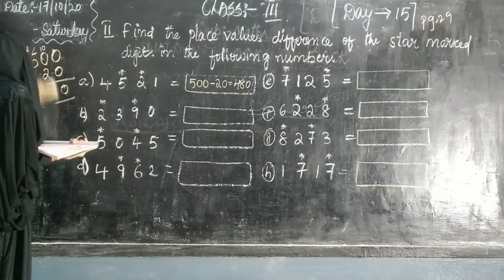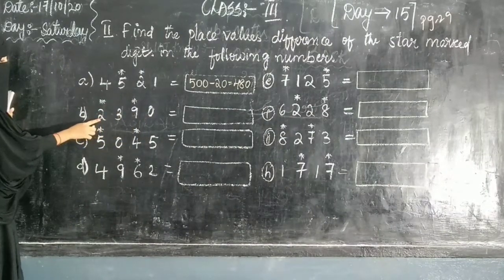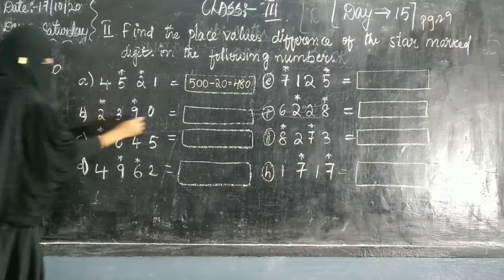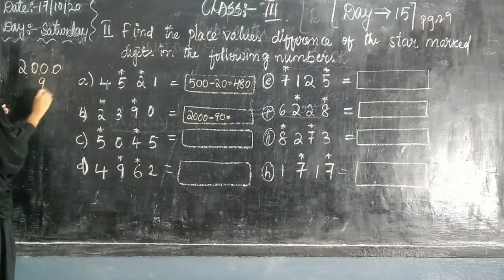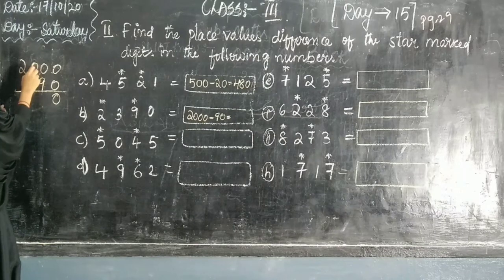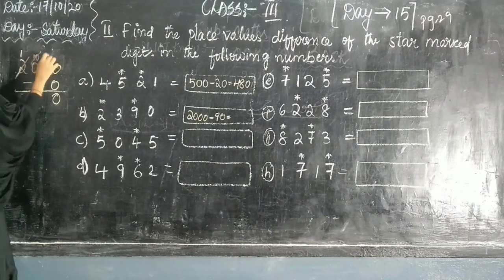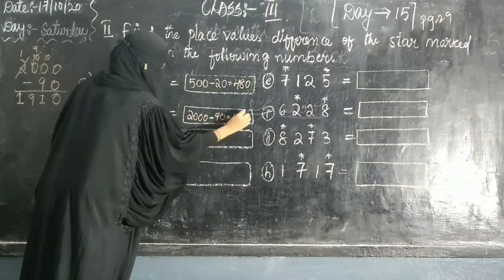Next, question 2: the star mark digit — find the place value difference. It's in the 1000s, so the place value is 2000. Minus the face value: 2000 minus 2 — we cannot subtract from 0s, so we borrow all the way. Here 10, then borrow: here 9, here 10. 10 minus 9 equals 1, 9 as it is, 1 as it is. The answer is one thousand nine hundred and ten.